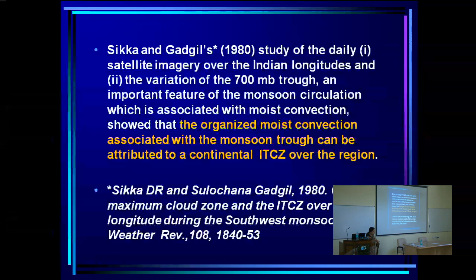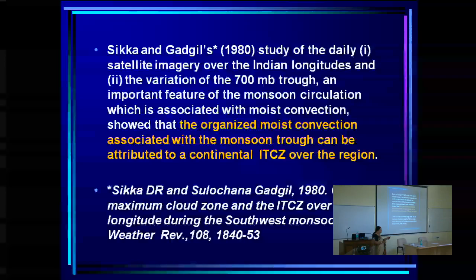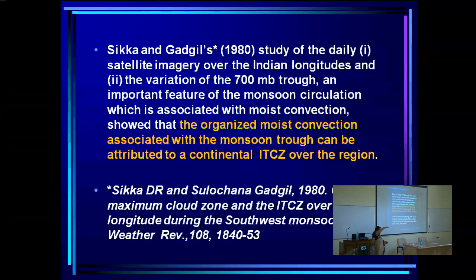We looked at variation of satellite imagery over Indian longitudes, and also the variation of the trough at 700 mb from weather maps. The 700 mb level has been known to Indian meteorologists to be the center of the rainfall system. The surface trough can be partly a dynamical trough or a heat low over Rajasthan, not associated with clouds. But if you go to 700 mb, the heating doesn't extend up there unless there is deep cloud.